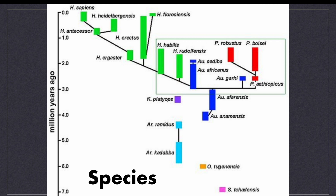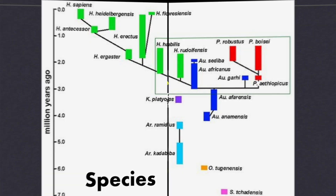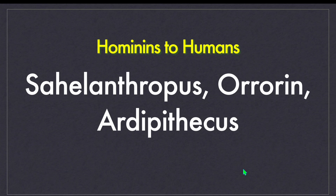Our genus Homo has nine or even more species inside it. We are the species Homo sapiens within the genus Homo. Now let's understand the characteristics and geographical distribution of the genera Sahelanthropus, Ororin and Ardipithecus.